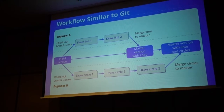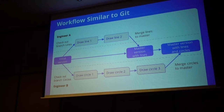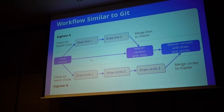We always have an initial version in the beginning. Engineer A can create a branch and make their own drawing there — for example, draw line 1 and make a commit, which is like a saved state. Then draw line 2 and merge it into the master branch. But engineer B at the same time can also work on creating circles. He used the same drawing, created a branch, drew several circles, and also merged. At the end, the latest version of the master branch will have circles and lines from both engineers.